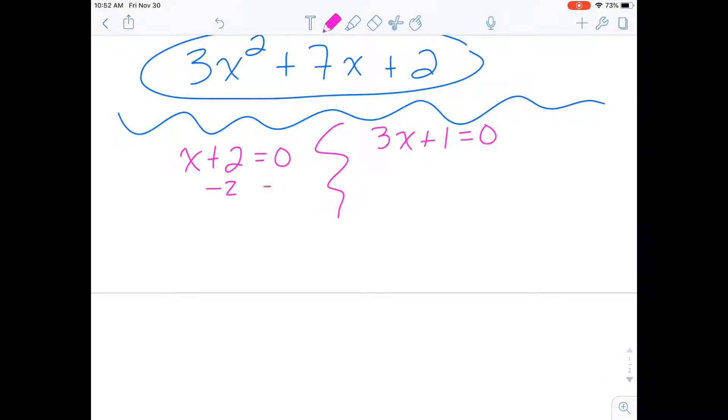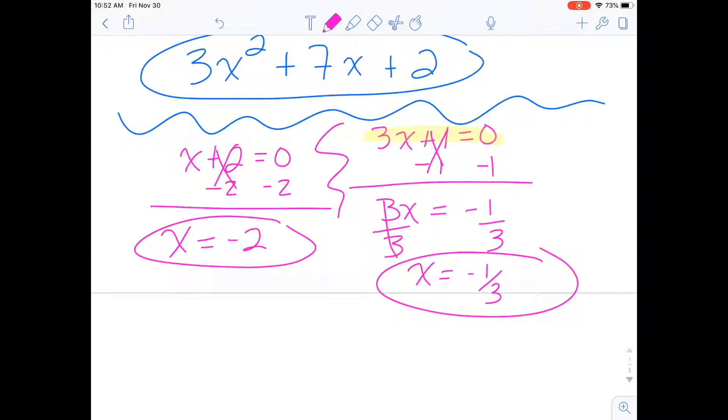So just subtract 2. On the left-hand side, x equals negative 2. But if you look at the one on the right-hand side, it's going to take us two steps. We are going to have to subtract 1, negative 1. And then we are just simply going to divide by 3. Divide by 3. And it's okay if we get fractions or decimals.